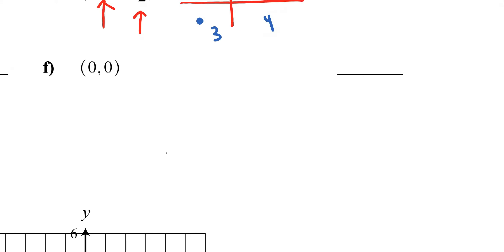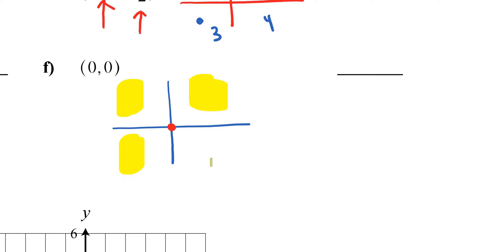For letter F, the point 0 comma 0 is right in the middle. Since you're at the origin, you're not in any quadrant space, so the answer is none as well.